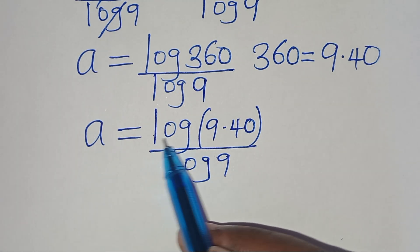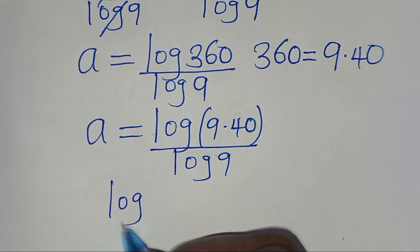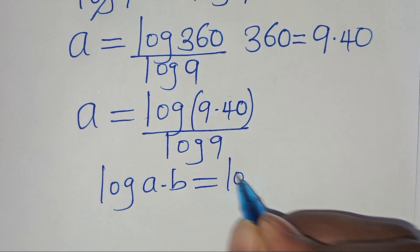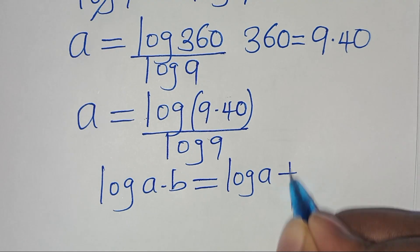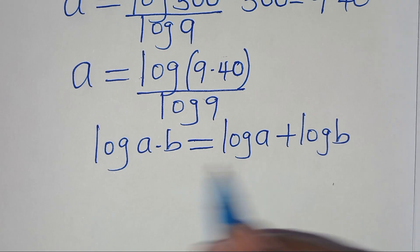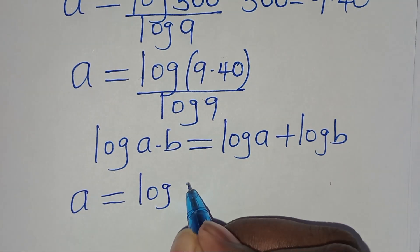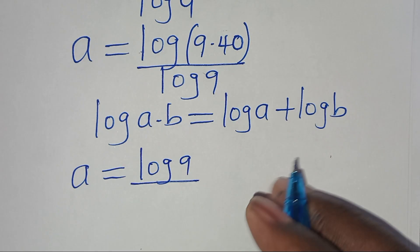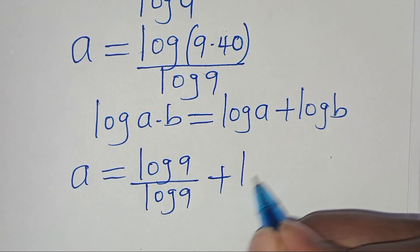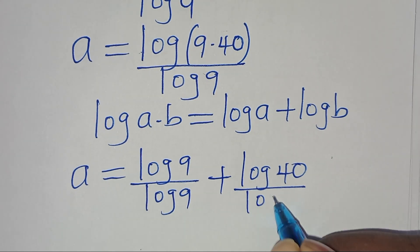Remember log(9 times 40) is in the form of log(a times b), which we can express as log(a) plus log(b). Applying this logarithm property, then we have a is equal to log 9 divided by log 9, then plus log 40 divided by log 9.